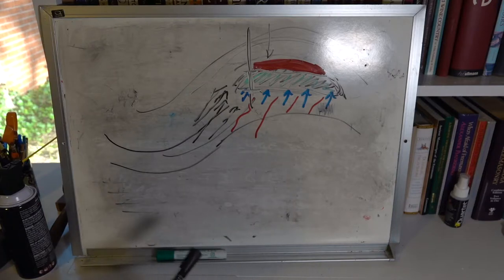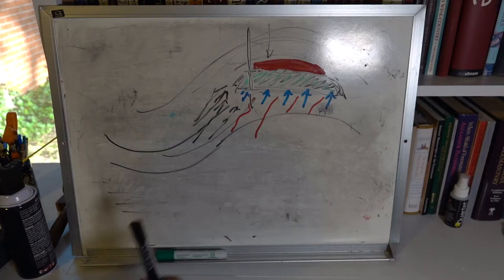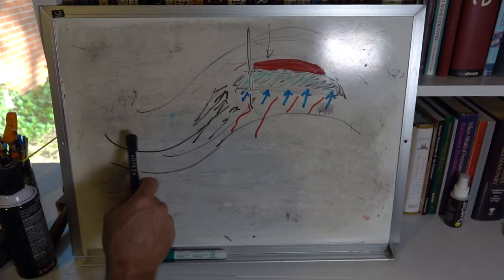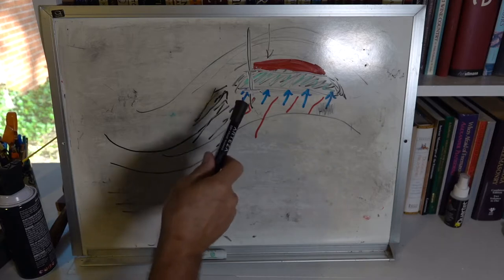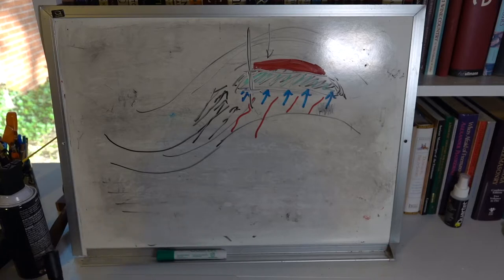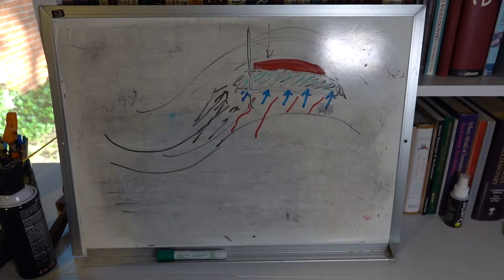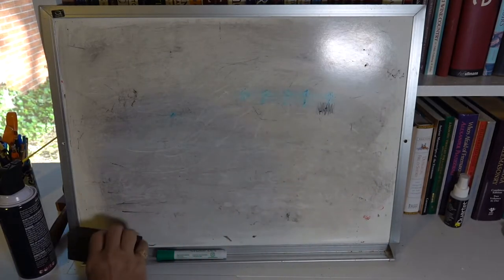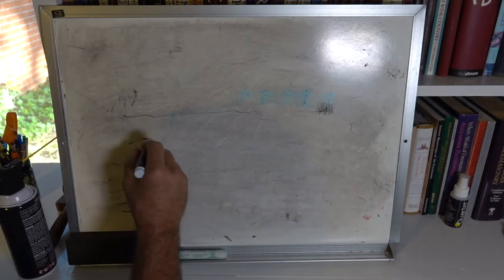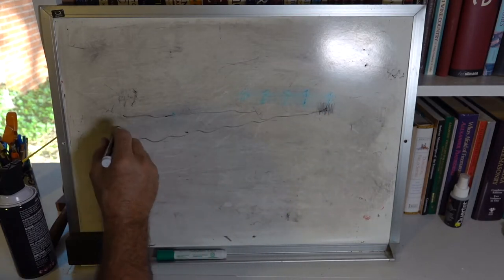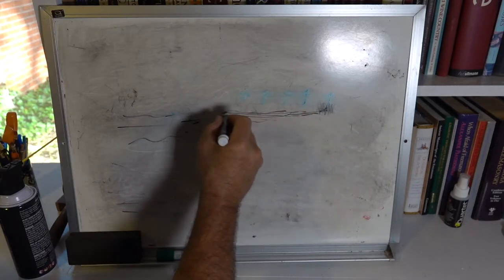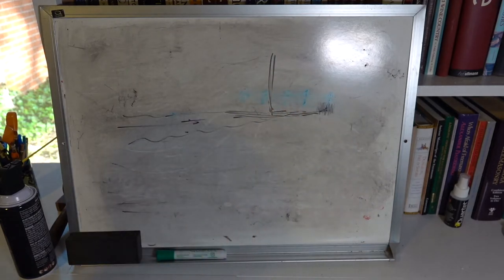I worked for Mobil — before the ExxonMobil merger — for two summers. One summer I was in the western Rockies in Wyoming doing field stratigraphy and looking for reservoir rock, where the seal was an anhydrite. The other summer I was in Dallas looking at rocks in the Gulf of Mexico and looking for where reservoir beds would pinch out. Pinch-outs are another type of trap: oil can migrate up-dip and fill the tips of beds between unconformities, forming another type of reservoir.